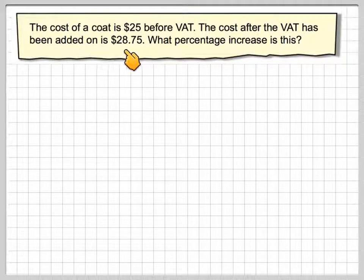The cost of a coat is $25 before VAT. The cost after VAT has been added on is $28.75. What percentage increase is this?